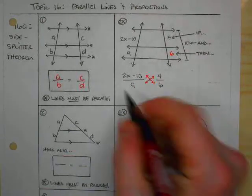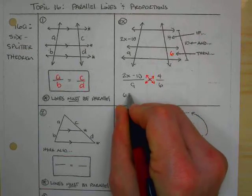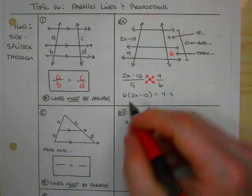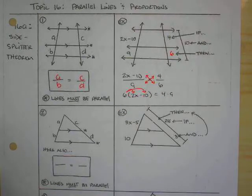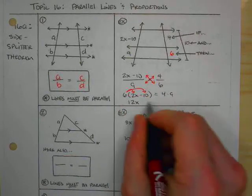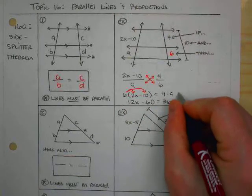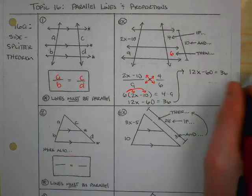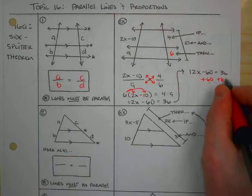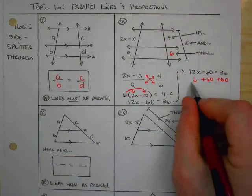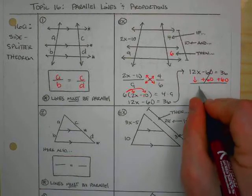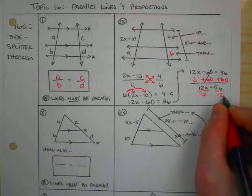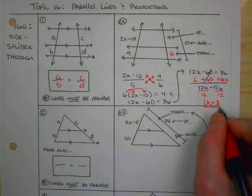You don't have to write these little arrows if you don't want to. When I cross multiply, I'm going to say 6 times 2X minus 10 is equal to 4 times 9. When I distribute and simplify, I'm going to get 12X minus 60 equals 36. I'm running out of room, so I'm going to rewrite that up top. So I've got 12X minus 60 equals 36. I'm going to add 60 to both sides. These two will cancel each other out, and I will be left with 12X equals 96. To solve for X, I just divide both sides by 12, and my answer, I get X equals 8.